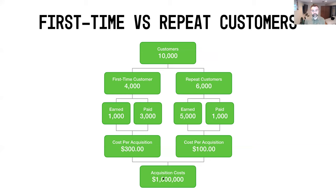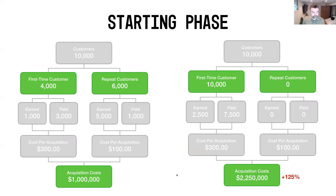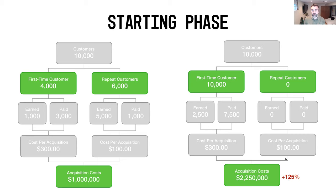Now let's look at what happens if you're just starting out with no repeat customers at all. If all 10,000 customers are first-time customers, holding the 75/25 earned-to-paid split constant, that's 7,500 paid customers at $300 per acquisition — yielding about $2.25 million in acquisition costs, roughly 125% more than the base case. This shows that with no repeat customers, you have to spend a lot more and work harder to bring first-time customers in the door.